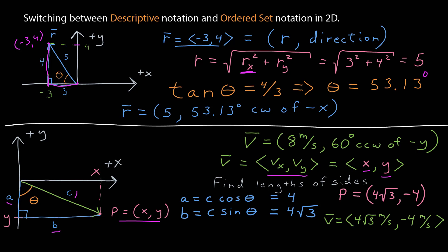And now, finally, I have my vector in ordered set form, which is 4 times the square root of 3 meters per second and negative 4 meters per second. The ordered set numbers also must have units.